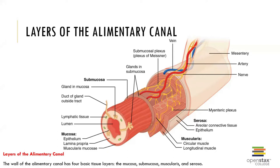The alimentary canal has four basic tissue layers. It has what we call the mucosa, the submucosa, the muscularis, and the serosa. You can see those in this image here.